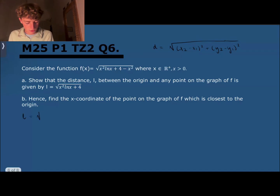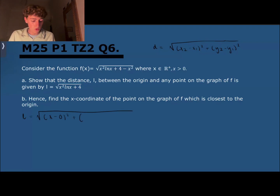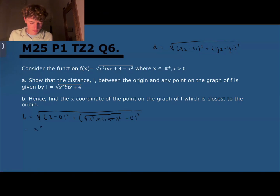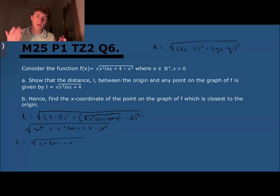In this case, the distance l from the origin to a point on the graph is the root of (x minus 0)² plus (f(x) minus 0)². Substituting the function, we get x² plus the square of root(x² ln x + 4 minus x²). The square root disappears when squared, giving x² plus x² ln x + 4 minus x². The x² terms cancel, leaving the distance as root(x² ln x + 4), as required.